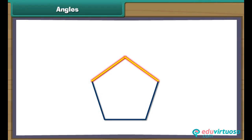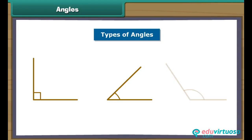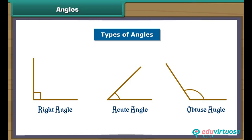Angles. Any two adjacent sides of a polygon form an angle between them. An angle is the space between two lines, line segments or rays that move away from one another from a common point. The measure of an angle is specified in degrees. There are three types of angles: right angle, acute angle and obtuse angle. Now we will learn them one by one in detail.